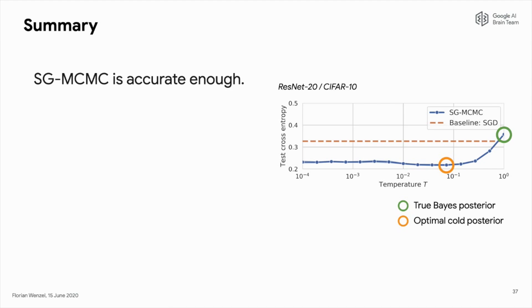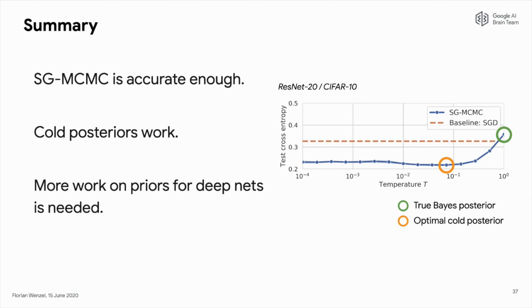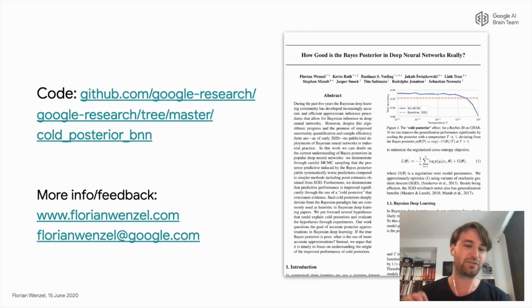To summarize: we find that potential problems with the inference methods cannot explain the cold posterior effect. On the other side, you can make BNNs work by considering cold posteriors and actually obtain state-of-the-art results. However, we argue this still points to a fundamental problem which is important to explore. We didn't get a conclusive answer on the origin of the cold posterior effect, but we think more work on understanding it is important — especially thinking more carefully about appropriate priors. The code is available on our GitHub repository, and I look forward to your questions. Thank you.